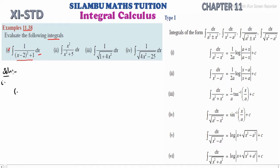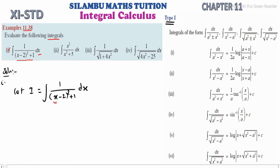Let i be equal to the integral of 1 divided by (x minus 2) whole square plus 1, into dx. We have some integration formulas. In (x minus 2), the single variable x is denoted.